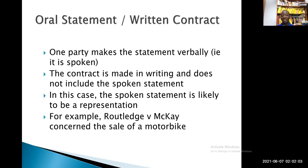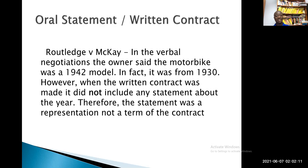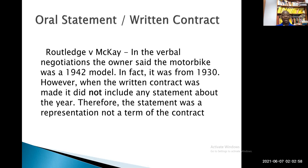We can cite Ridledge and Mackey again as an illustration. During verbal negotiation, the owner stated that the motorbike was a 1942 model, but the truth was that it was a 1930 model. Later, when the written contract was made, it did not include any statements about the year of manufacture. For that matter, the statement regarding the year of make was a representation, not a term of contract, because the oral statement was made first and the subsequent written contract was absolutely silent on that point.